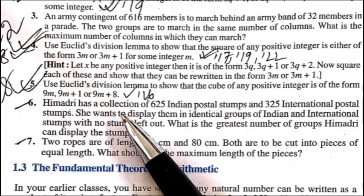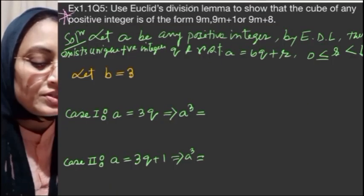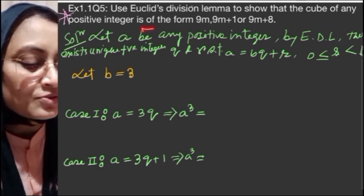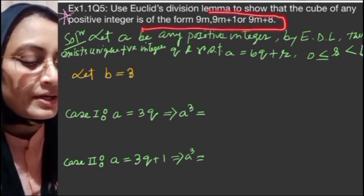Question number five, this is very important. Use Euclid's Division Lemma to show that the cube of any positive integer is of the form 9m, 9m+1, or 9m+8.